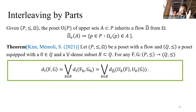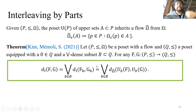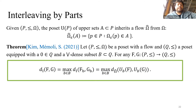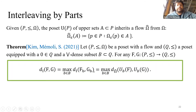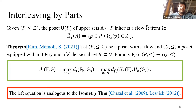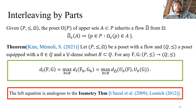Each element decomposes as the join, and crucially the interleaving distance itself also decomposes as a join — meaning the maximum — of interleaving distances between these join components. This is very nice because we can distribute the computation of the interleaving distance by computing these individual pieces. The left equation is analogous to the bottleneck-interleaving isometry theorem, because we have the interleaving being distributable into simpler interleavings.